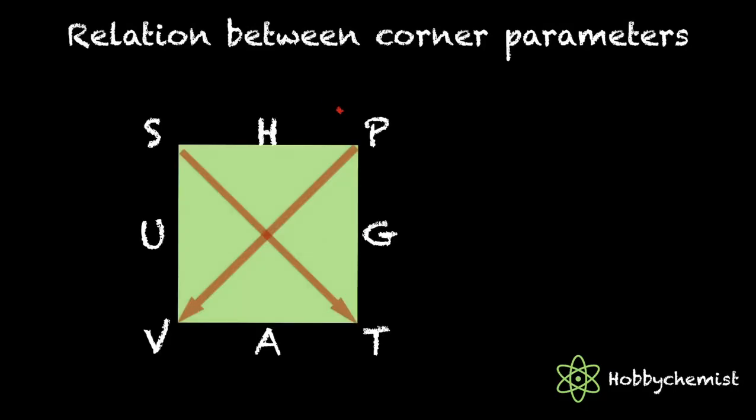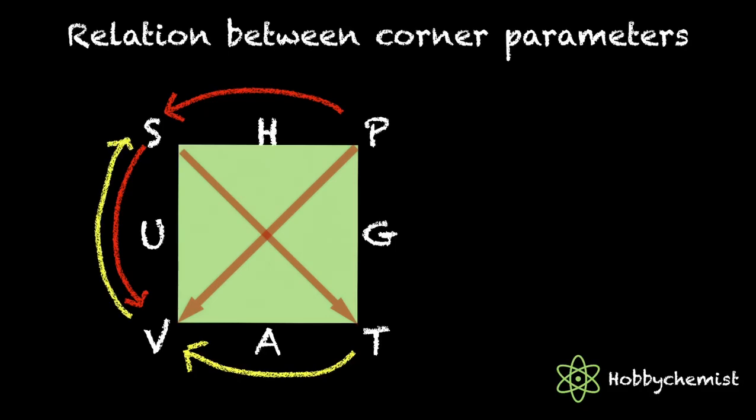For deriving relations connecting corner points we need to start from any point on corners and go in one direction as given. Now to get the equivalent relation, start from the next point in the opposite direction. The last point in each relation would be a constant.